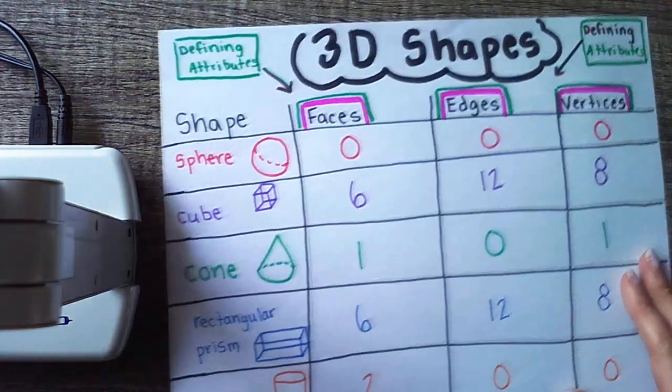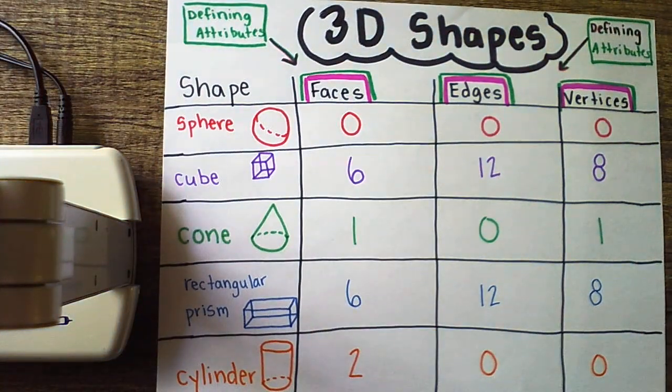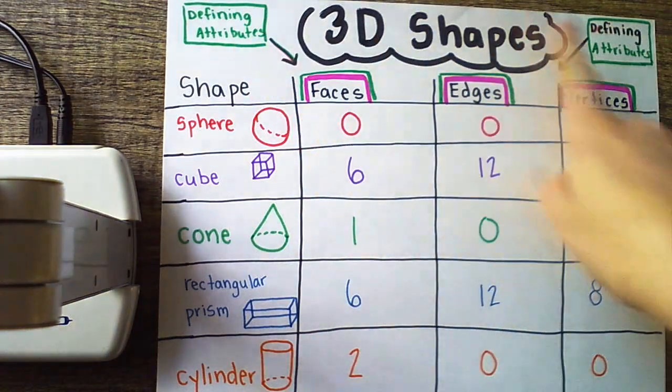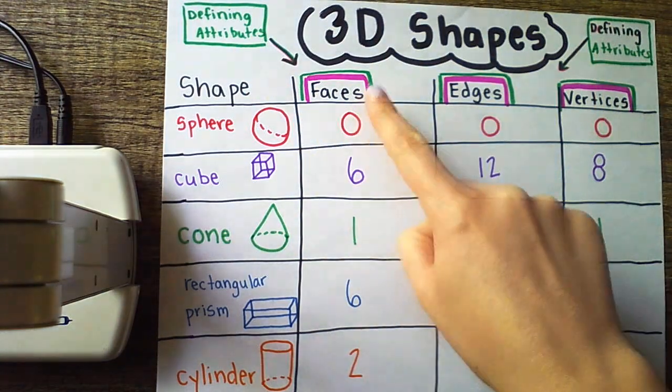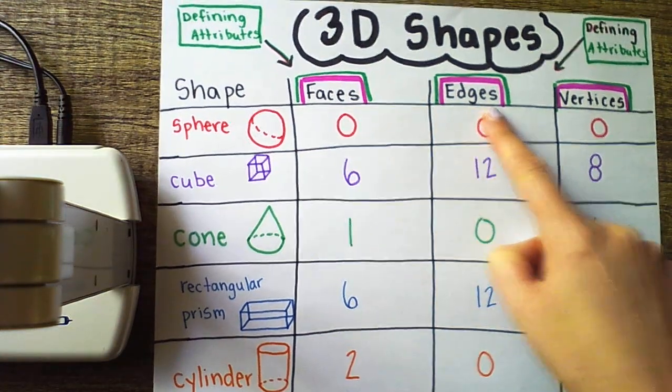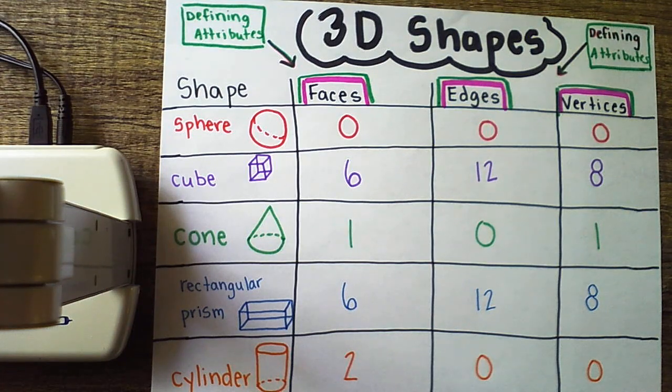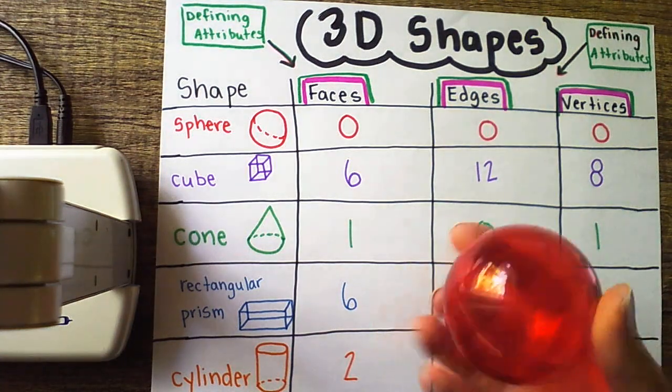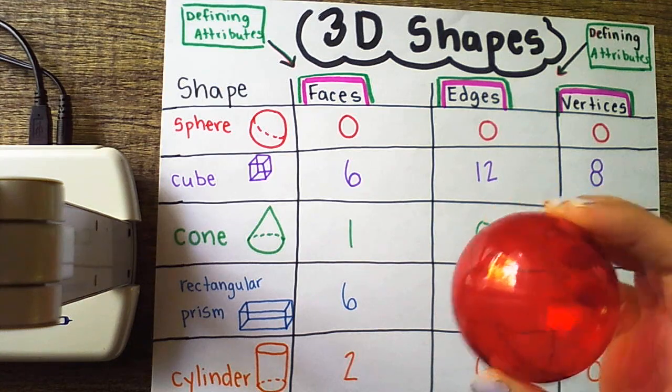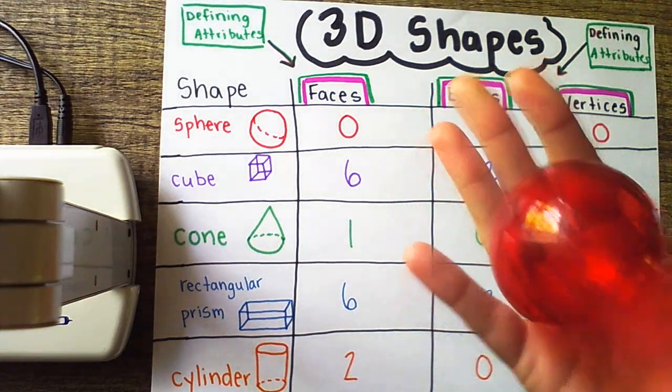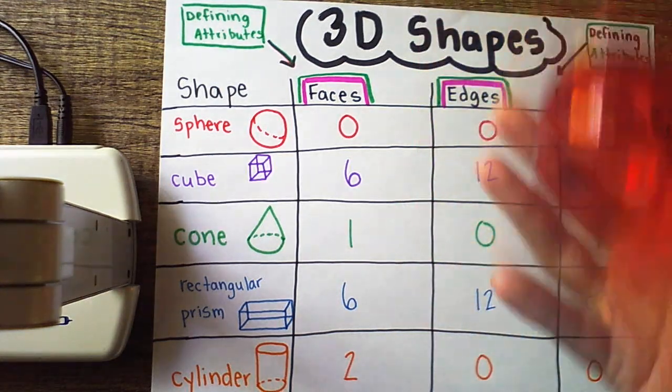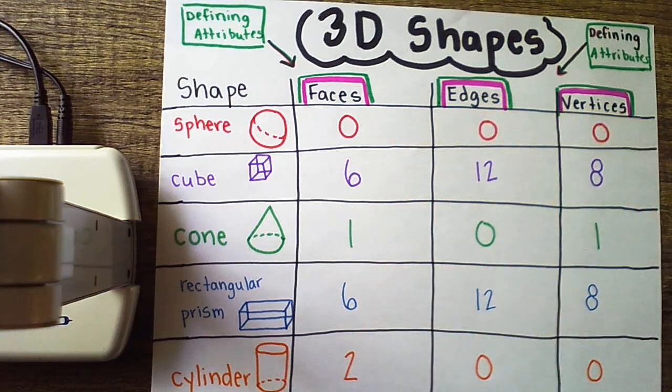So a quick review before we start of the 3D shapes that we discussed yesterday. We said that the defining attributes of 3D shapes are the number of faces, edges, and vertices that that shape has. For example, a sphere is a 3D shape. You guys call it a ball. And I say, wait, what's the real name for it? A sphere. It rolls. It has 0 faces, 0 edges, and 0 vertices.